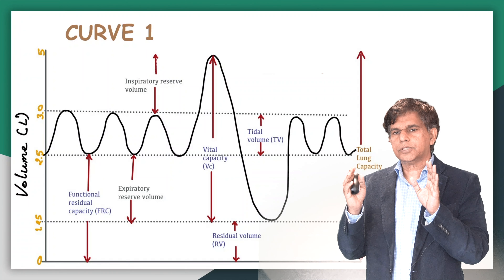Always look at the residual volume on the right side — this is what remains inside the lung and is very hard to directly measure. The patient takes a deep breath going up, then blows it out. You can see the forced vital capacity difference in the slide. The top of the normal curve measures peak flow.